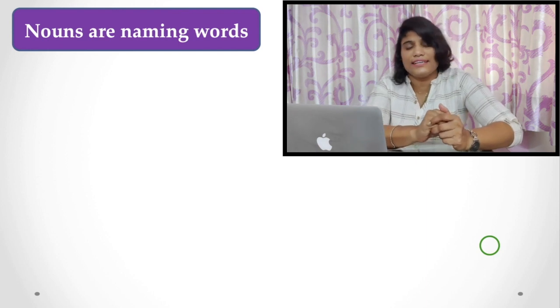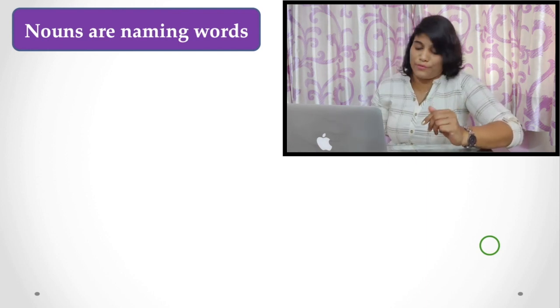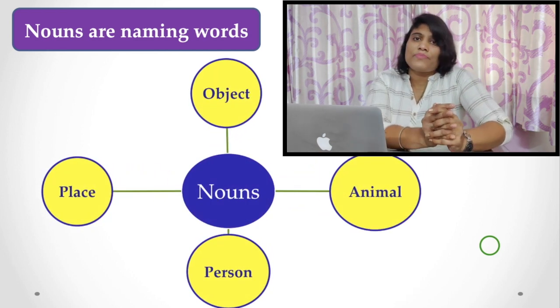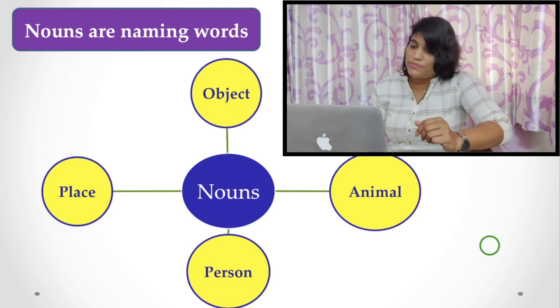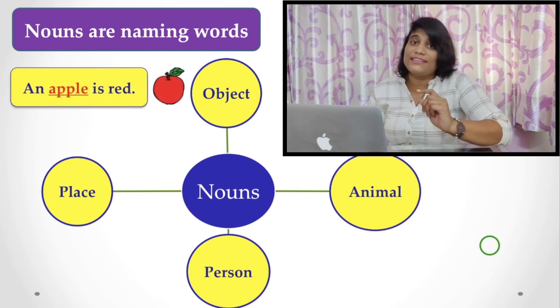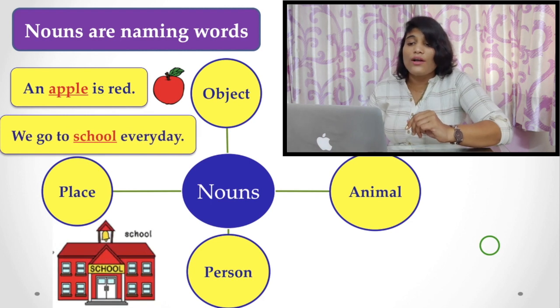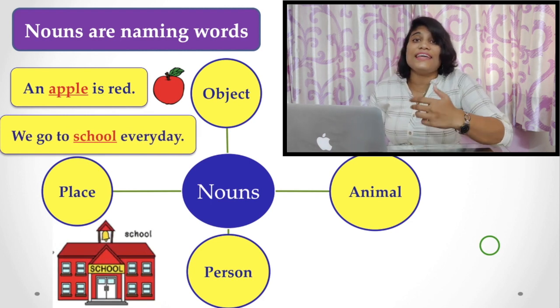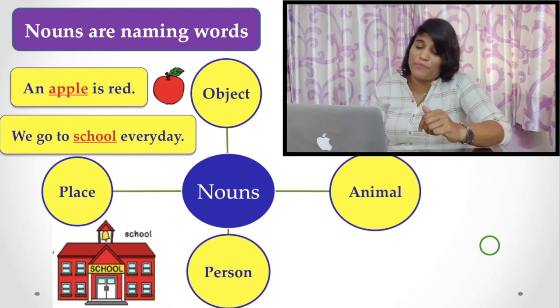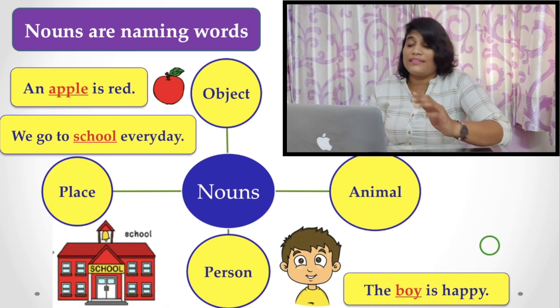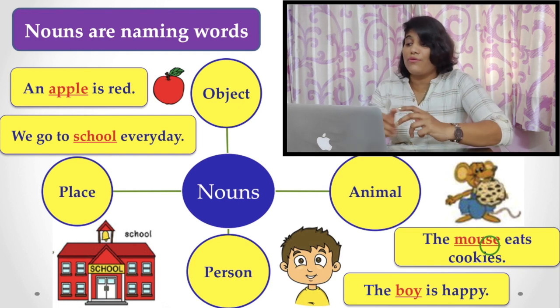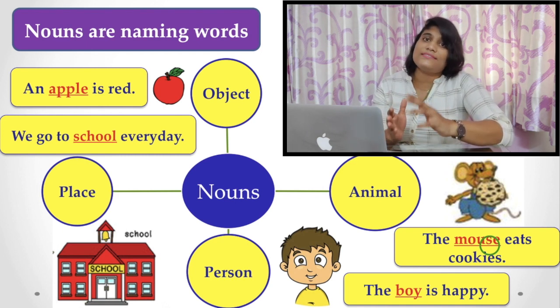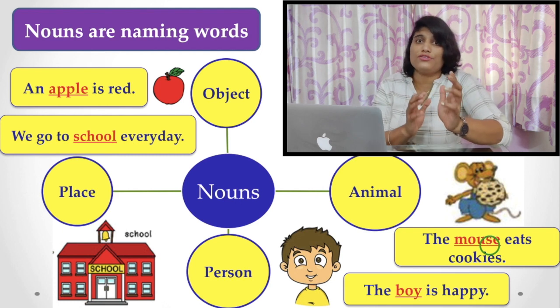Noun comes in detail. What are the naming words or nouns? We can say so many things and call them by their name. Sometimes it is an object, like an apple is red here. Apple is an object. We go to school every day. That is the name of a place. The school refers to a name of a place. The boy is happy. That refers to a person. The boy is a person. And animals, like the mouse eats cookies here. Mouse is the animal. So any type of name is referred to by noun.